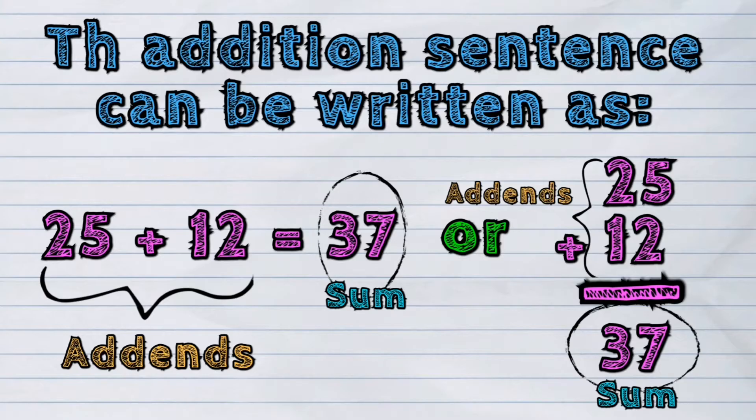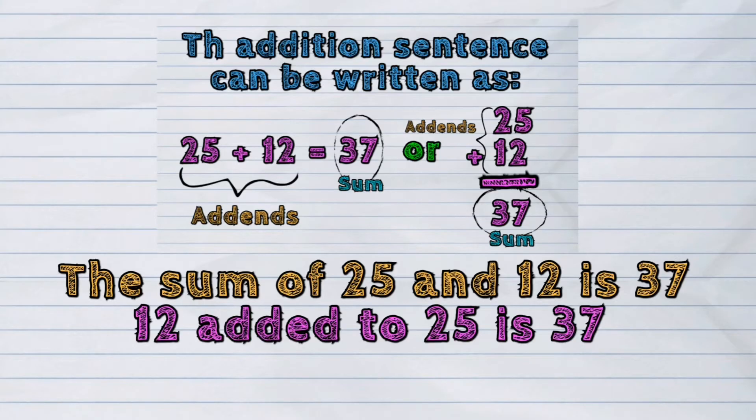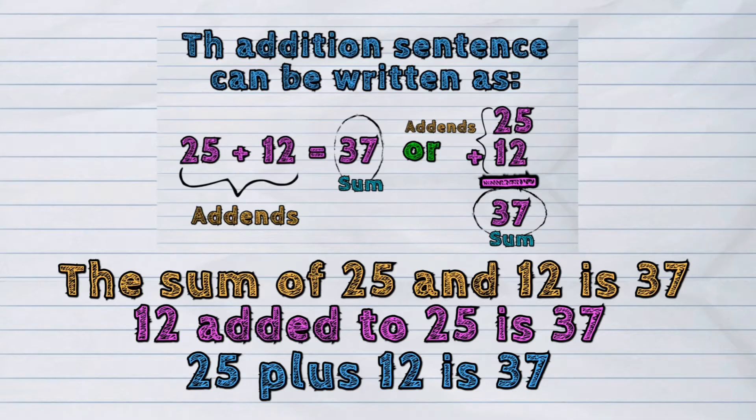We say the sum of 25 and 12 is 37, or 12 added to 25 is 37, or 25 plus 12 is 37.